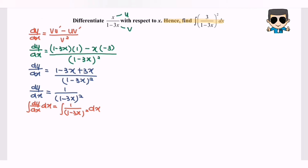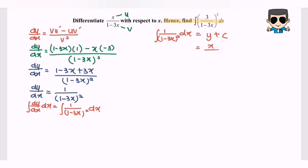So meaning that the integral of 1 over 1 minus 3x to the power of 2 with respect to x will equal y plus c. So in here, y is equal to x over 1 minus 3x, plus c.